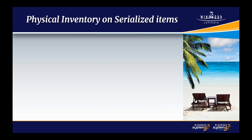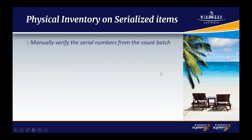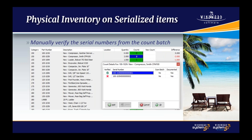When you do physical inventory on serialized items, when you create a count batch, you need to make sure that you include serialized items upon creating the count batch. It's under the option. Before you build the account batch, make sure that you select 'include serialized items' under the option. The next thing is you can manually verify the serial numbers from the account batch. After you have created the account batch, you have the option to manually verify the serial numbers by clicking on the count and then selecting the serial number.